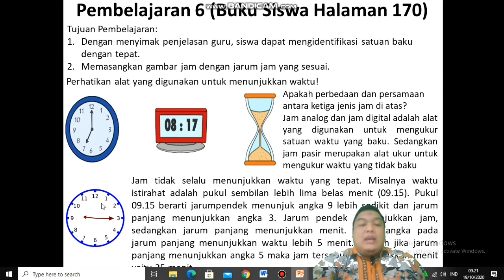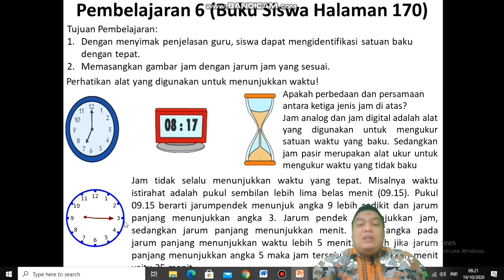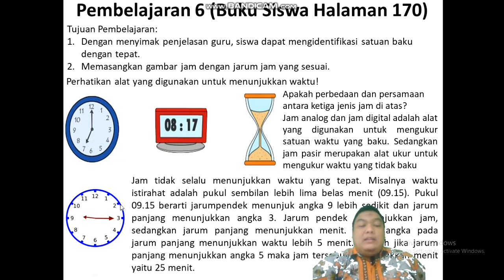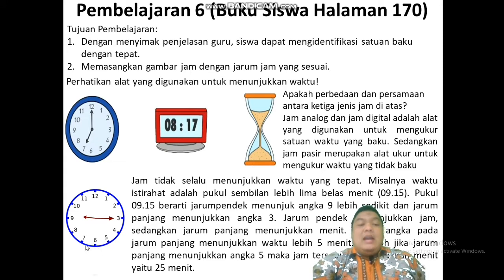Jarum pendek menunjukkan jam, sedangkan jarum panjang menunjukkan menit. Setiap angka pada jarum panjang menunjukkan waktu lebih 5 menit. Contohnya, jika jarum panjang menunjukkan ke angka 5, maka menunjukkan menit yaitu 25 menit. Masing-masing angka itu nilainya 5 menit: kalau jarum panjang ke angka 1 berarti 5 menit, ke angka 2 berarti 10 menit, ke angka 3 berarti 15 menit, ke angka 4 berarti 20 menit, ke angka 5 berarti 25 menit, ke angka 6 berarti 30 menit, ke angka 7 berarti 35 menit, ke angka 8 berarti 40 menit, dan seterusnya.